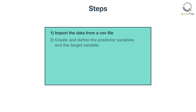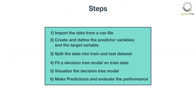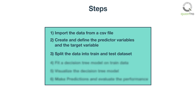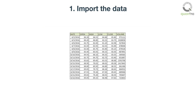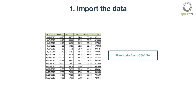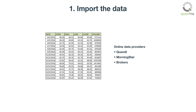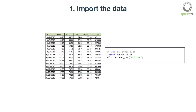Following are the steps involved in the process. In this video, we will cover the first three steps. The first step is to import the data. We will input raw data of a stock from a CSV file. You can get raw data in CSV format from different online sources. The data consists of open, high, low, close prices, and volume data. Predictor and target variables are created using this raw data.